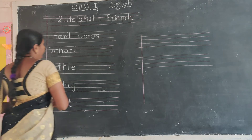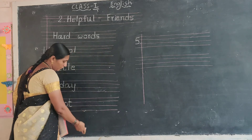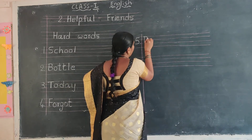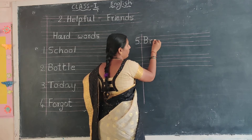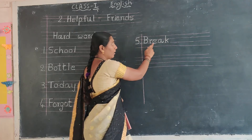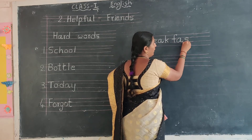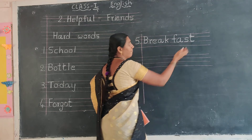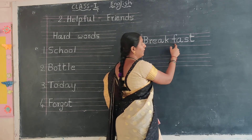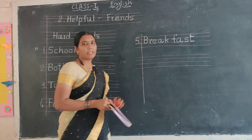Next one. Number 5 in the margin. B-R-E-A-K, Break. Small gap, just one letter gap. F-A-S-T, Fast. Break Fast. Breakfast. Breakfast means the first meal of the day.